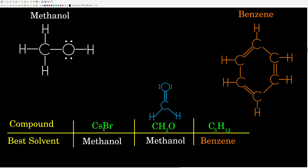Now let's look at the solutes. Cesium bromide is an ionic compound. Cesium's electronegativity is definitely less than 1, bromine's is 2.8, so the difference is large. An ionic compound is essentially a very, very polar compound, so that means we want the most polar solvent — that would be methanol. Formaldehyde is also a polar molecule: oxygen is 3.5, carbon is 2.5, difference is 1.0. This is not a symmetric compound — it's trigonal planar, with oxygen being different than the hydrogens. So this is a polar molecule, meaning we want the more polar solvent: methanol.